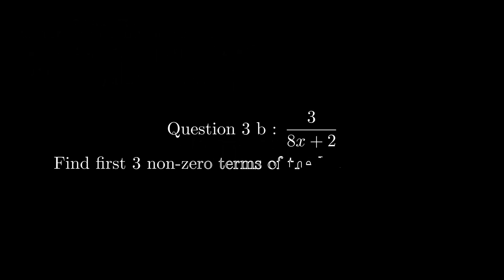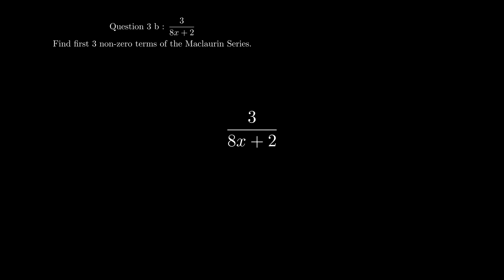Question 3b asks us to find the first three non-zero terms of the Maclaurin series. We're first going to start off by dividing the numerator and denominator by 2. Now do you notice something? It should look familiar because it has been rewritten in the format of a over 1 minus r, which we can now convert into a summation. Once we plug in n equals 0, 1, and 2 respectively, we can simplify, and that will give us our final answer.